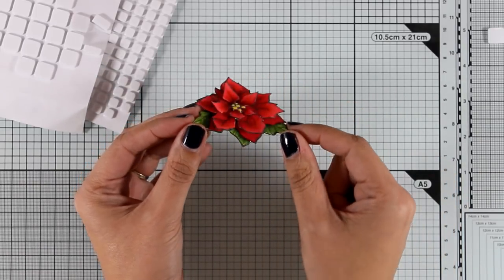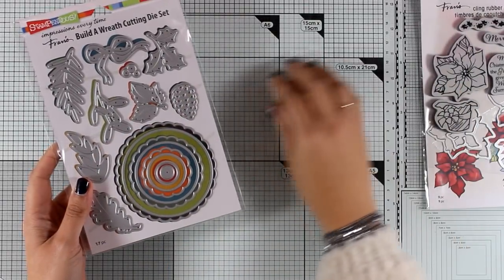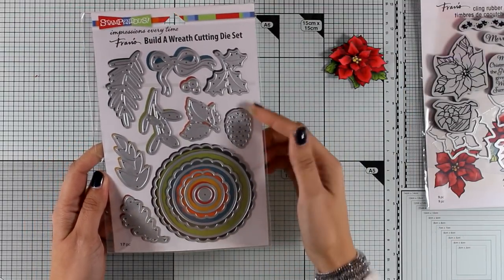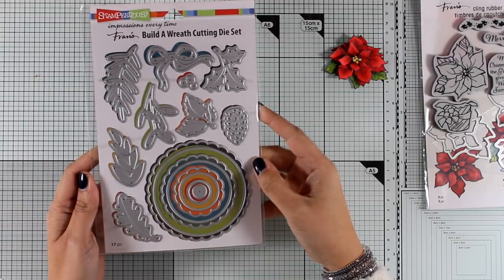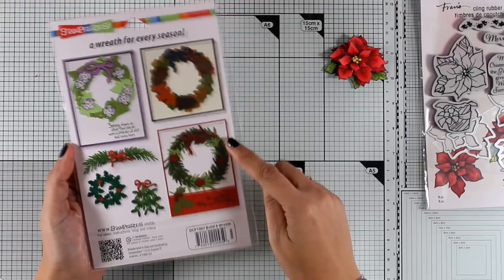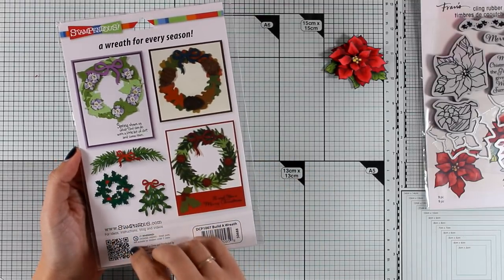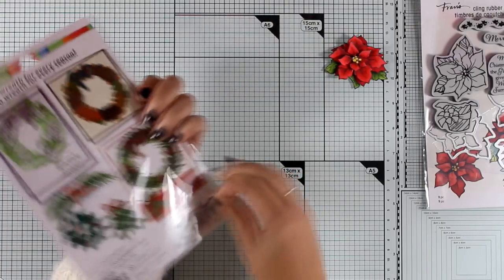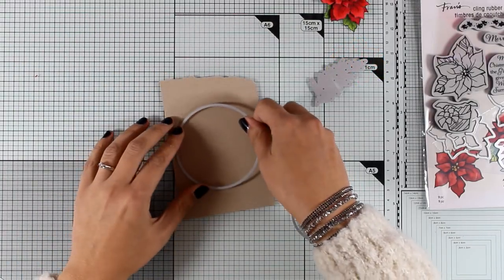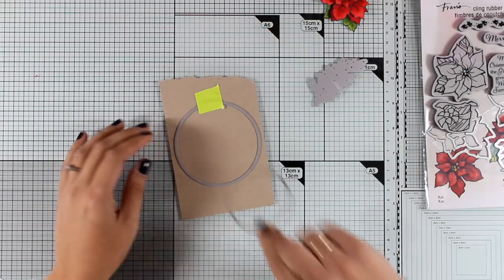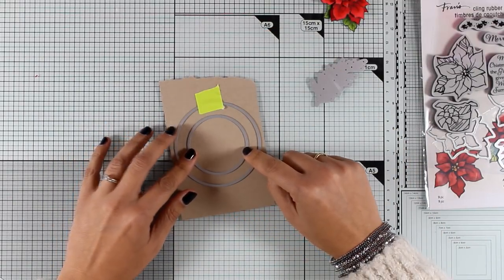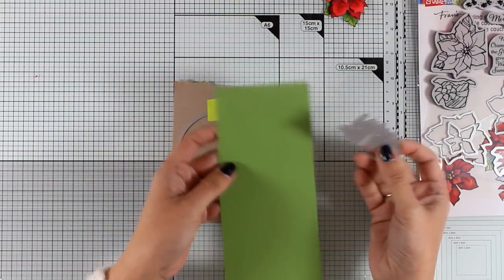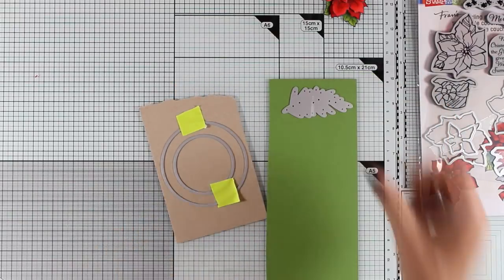Now I'm going to use this die set which is called Build a Wreath and it has all these circles to create a wreath as well as lots of different leaves for decorating your wreath. This is a very versatile die set because you can create wreaths for pretty much every season. Of course I'm going to create a Christmas one. For today I am using a craft colored cardstock and I'm going to place one circle inside the other to create my wreath and then I'm also going to use this die from the same die set and cut it out a bunch of times from this green cardstock.